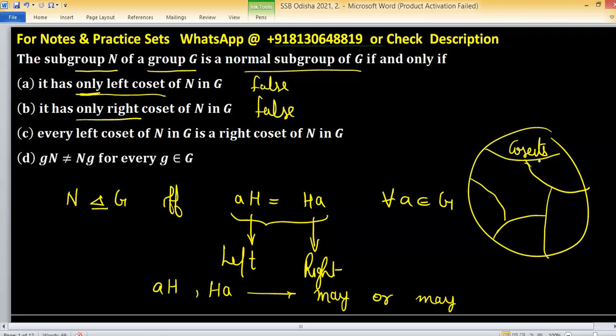So either two cosets are disjoint or they are same. So cosets divide the group into equivalence classes.